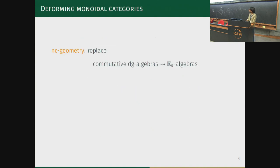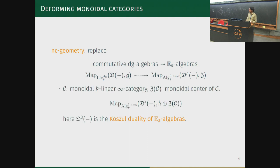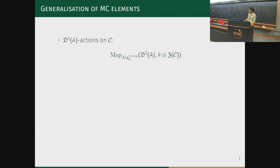In the world of non-commutative geometry, we replace commutative dg algebras with E_n algebras and Maurer-Cartan elements with certain generalizations. If C is a monoidal Calabi-Yau category, one can talk about the monoidal center of C—the endomorphism object of C viewed as a bimodule over itself—and there is an object which is the generalization of the Maurer-Cartan elements. D₃A is the E₃ cosimplicial dual, a generalization of the commutative cosimplicial dual. A map from D₃A into the center Z(C) is the same as an action of D₃A on C, since giving a map into the endomorphism object is the same as giving an action.